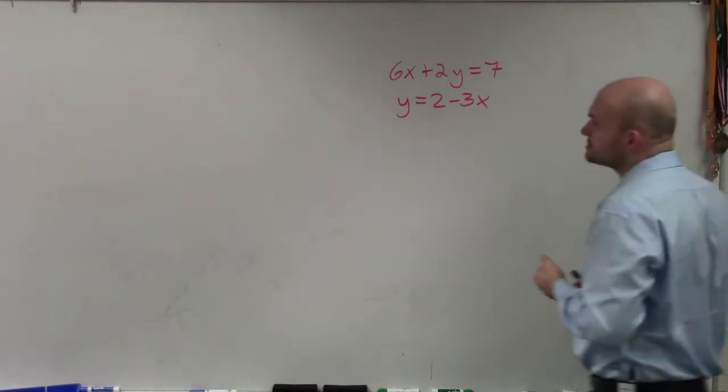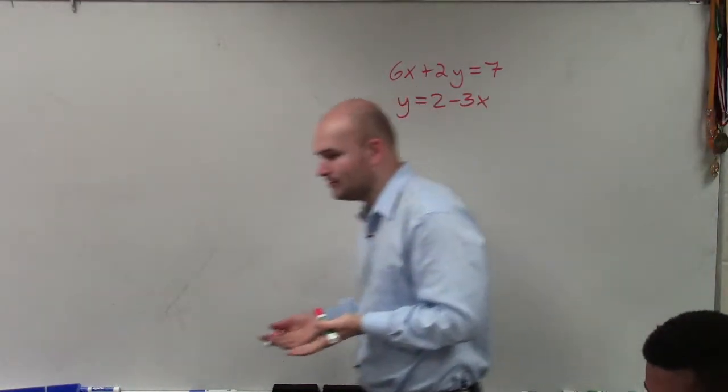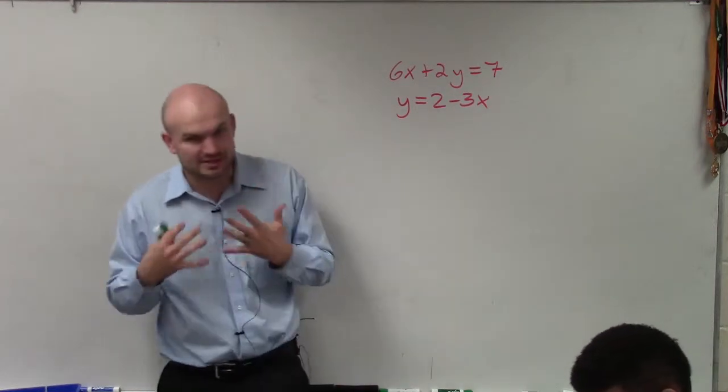So when you have 6x plus 2y equals 7, again, in the other one we have y equals 2 minus 3x. Again, we're looking at substitution.